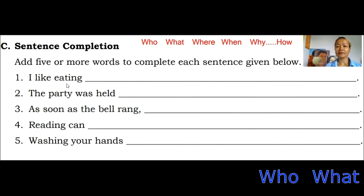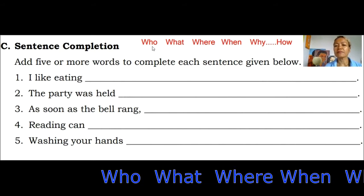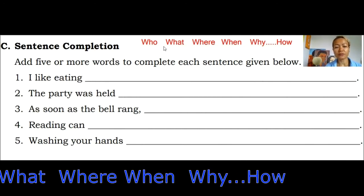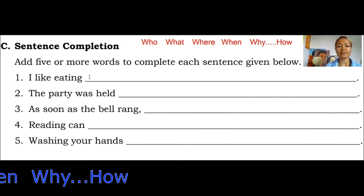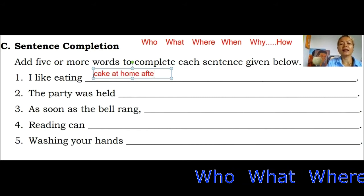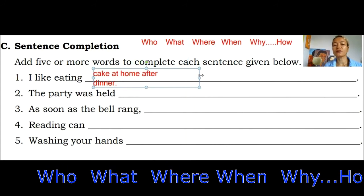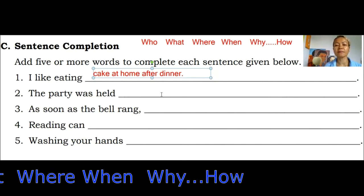'I like eating.' The who is already in there — it's I. What do you like eating? Cake. Where? At home. When? After dinner. So: 'I like eating cake at home after dinner.' That's the five words right there.